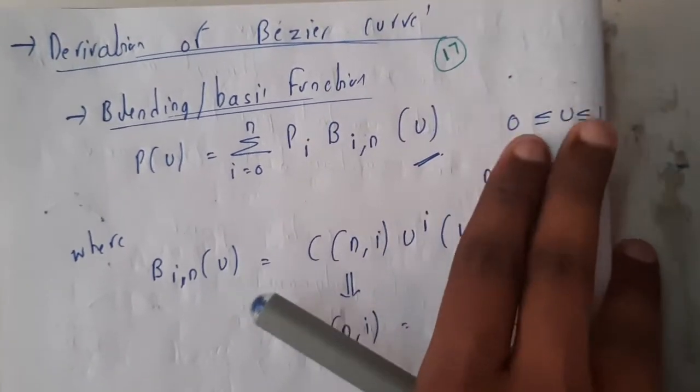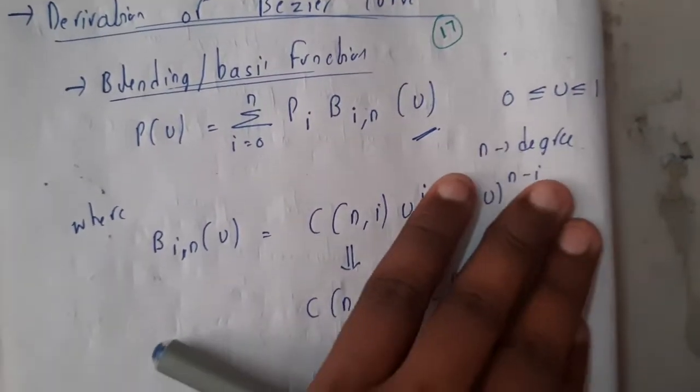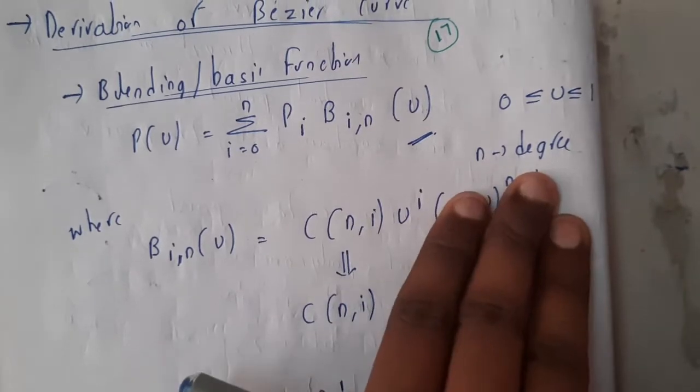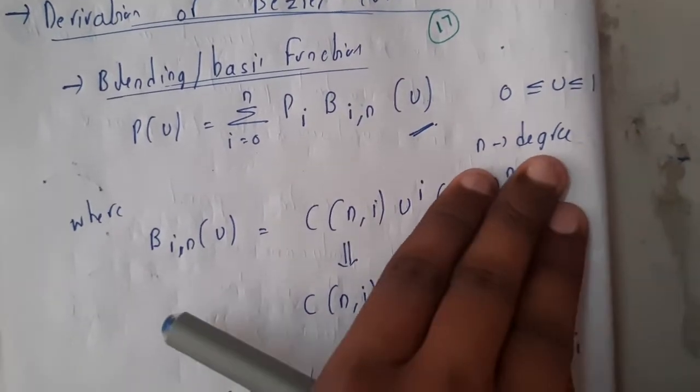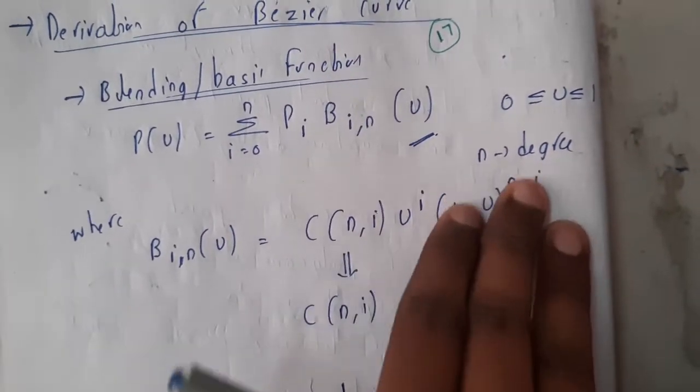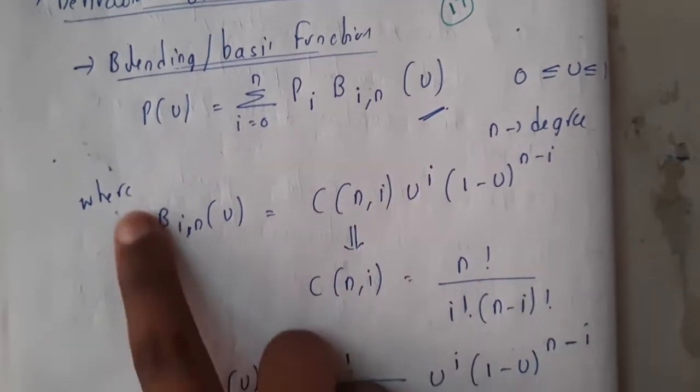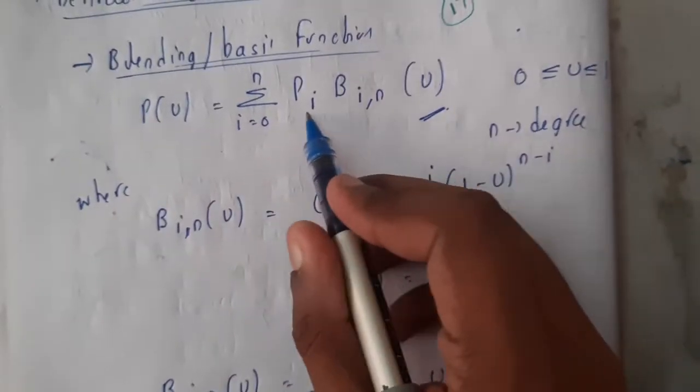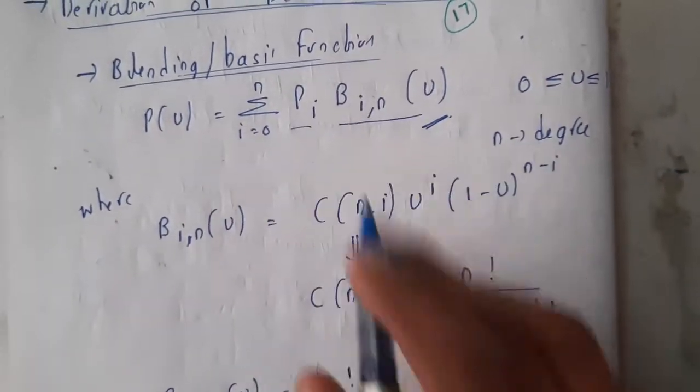So n is nothing but your degree. I hope everyone remembers that degree is nothing but number of control points minus one.